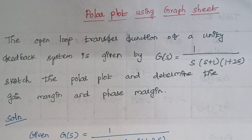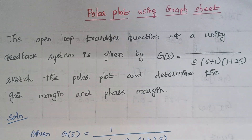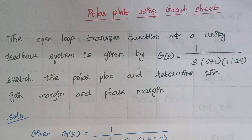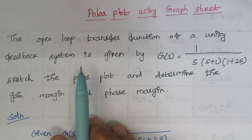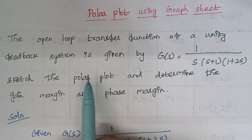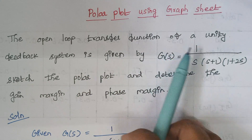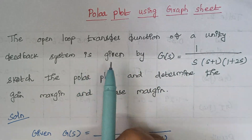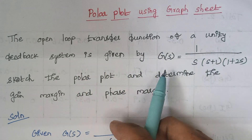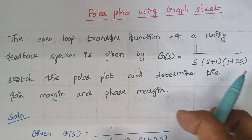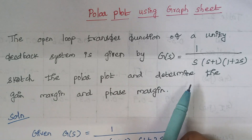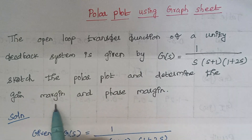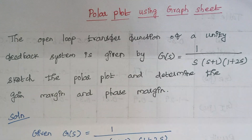Hello viewers, I am Kausalya. Today's topic is how to draw a polar plot using a graph sheet. The open loop transfer function of a unity feedback system is given by this transfer function. Sketch the polar plot and determine the gain margin and phase margin.